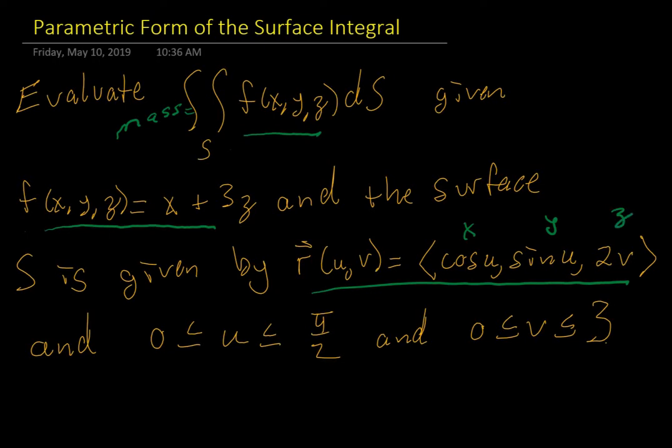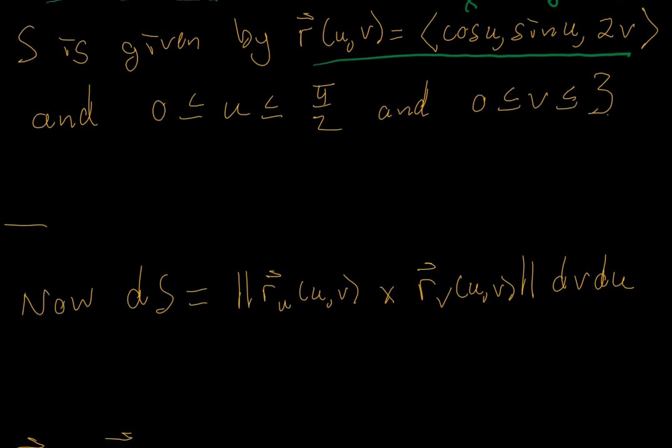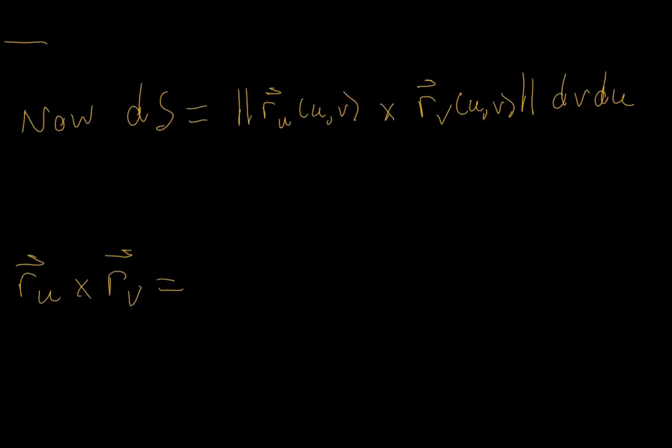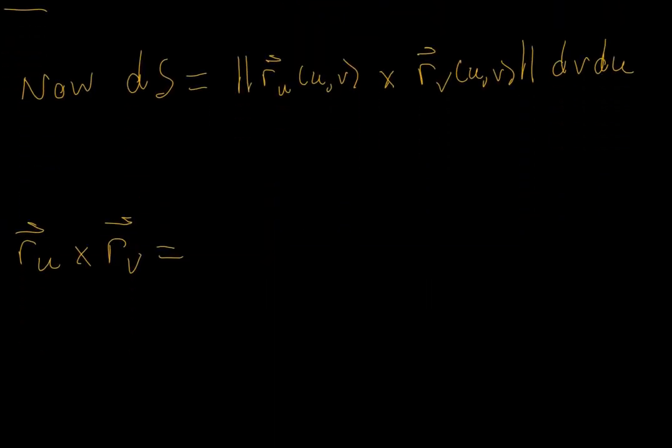So this particular surface integral requires us to find a number of pieces. Remember dS is given to be magnitude of the cross product of the two partial derivatives of the surface.